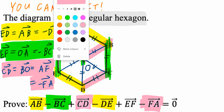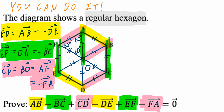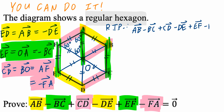To begin the formal proof, you must start with RTP — required to prove — and copy the question as is. Be mindful that the right-hand side is not equal to zero; it is equal to the zero vector. A zero vector is not the same as zero: one has magnitude only, and the other has both magnitude and direction. The first step is to write down LS (left side) and copy it as is.